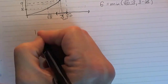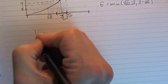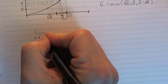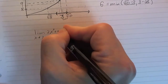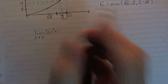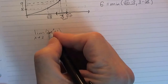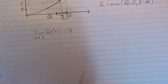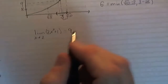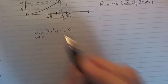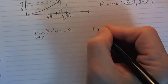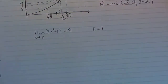Now let's look at another example. Let's suppose that we've got the limit as x goes to 2 of 2x squared plus 1. That limit is 9, since 2 squared is 4, times 2 is 8, plus 1 is 9. Let's again let epsilon equal 1 for simplicity, but any epsilon you choose, we can still find a delta neighborhood.